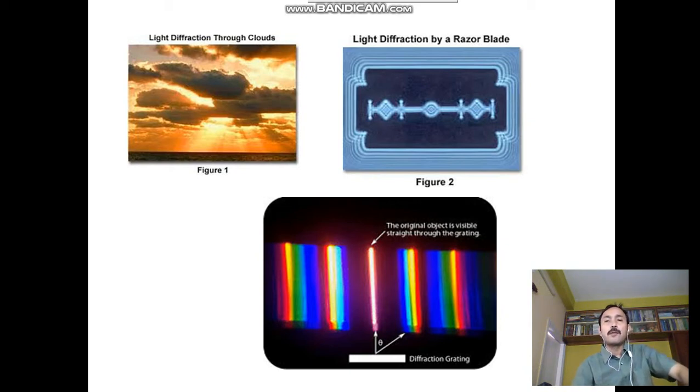Again, if a razor blade is placed and light is made to fall opposite to the direction, then along the razor blade you will get this type of optical activity that is shown in figure 2.